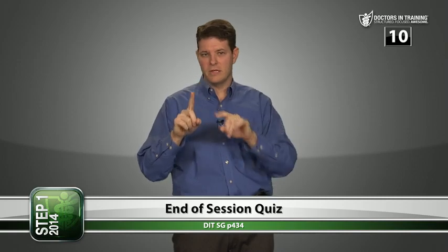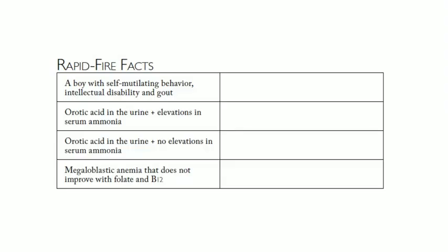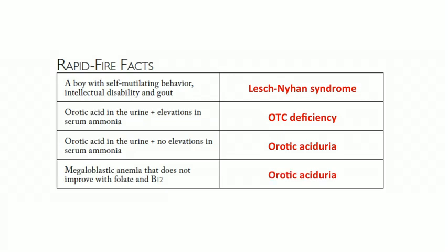Last quiz question: how many adenine residues in a DNA molecule if one strand contains A=2000, G=500, C=1500, T=1000? One strand has 2000 adenines and 1000 thymines, but the complementary strand has 1000 additional adenines paired to those thymines — giving a total of 3000 adenine residues. Rapid-fire facts: boy with self-mutilation, intellectual disability, and gout = Lesch-Nyhan. Orotic acid + high ammonia = OTC deficiency. Orotic acid + normal ammonia = orotic aciduria. Megaloblastic anemia not improving with folate/B12 = orotic aciduria.